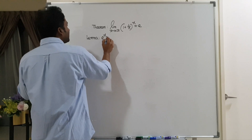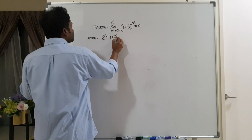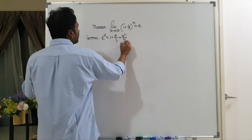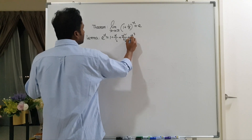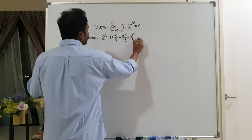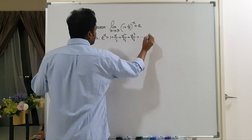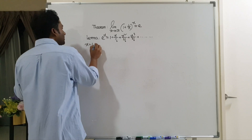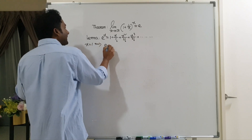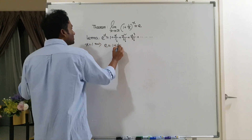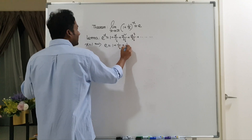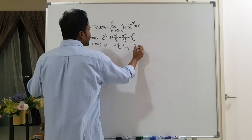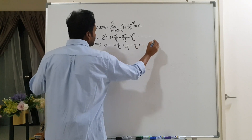So e to the power x means 1 plus x by factorial 1, plus x squared by factorial 2, plus x cubed by factorial 3, plus dot dot dot. So e to the power 1 means 1 plus 1 by factorial 1, plus 1 by factorial 2, plus 1 by factorial 3, plus dot dot dot.